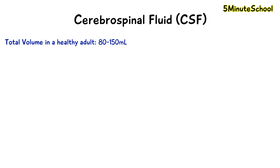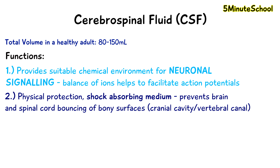There are three main functions of cerebrospinal fluid and the first one is to provide a suitable chemical environment for neuronal signalling. The balance of positive and negatively charged ions helps with the production of action potentials and post-synaptic potentials. If this balance is disrupted, it can seriously disrupt the production of these nerve potentials.